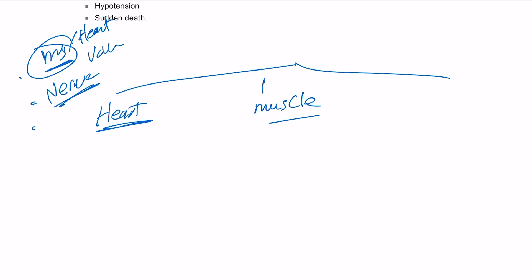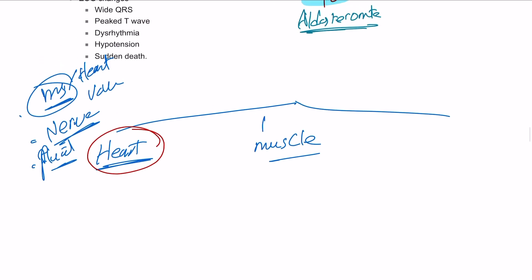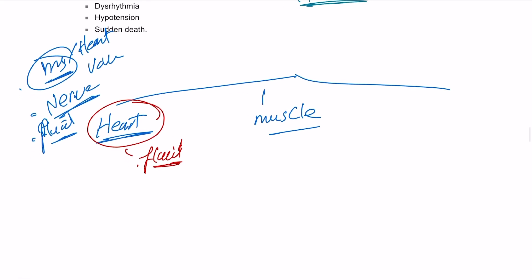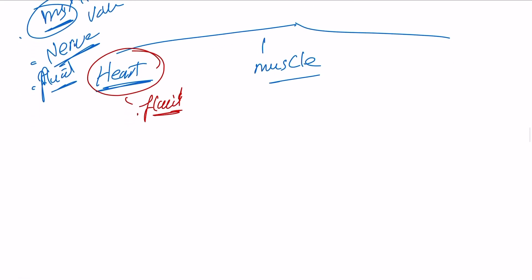In the heart muscle, hyperkalemia can lead to flaccid paralysis of the heart muscle. This is why potassium can be used as a cardioplegic agent in cardiothoracic surgery. It can also lead to some ECG changes: the P wave can be absent, the QRS can be wide...